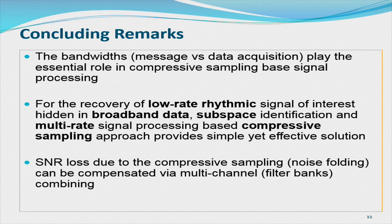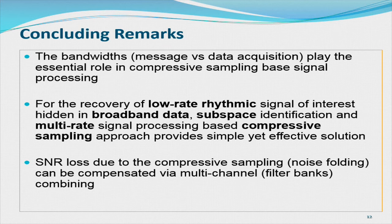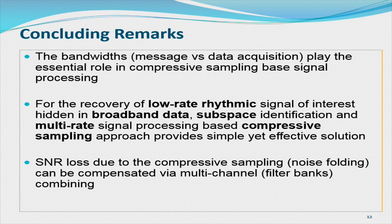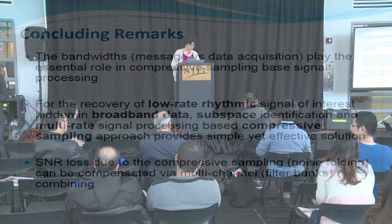In conclusion, the so-called message bandwidth or information bandwidth versus data acquisition rate plays an essential role in compressive sensing based signal processing. For the recovery of low-rate rhythmic signals of interest hidden in broadband data, subspace identification and multi-rate signal processing based on a compressive sensing approach provide a simple yet effective solution. SNR loss — a typical disadvantage of compressive sensing due to noise folding — can be compensated using virtual multi-channel or multi-frame filter bank ideas by combining the sub-channel results. Thank you.